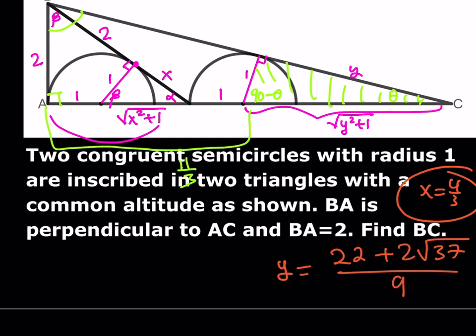We can use the Pythagorean theorem: find AC, and since we know AB, we just use the Pythagorean theorem. But actually, since AC equals 2y from the 1-to-2 similarity ratio, using similarity is a cleaner approach.